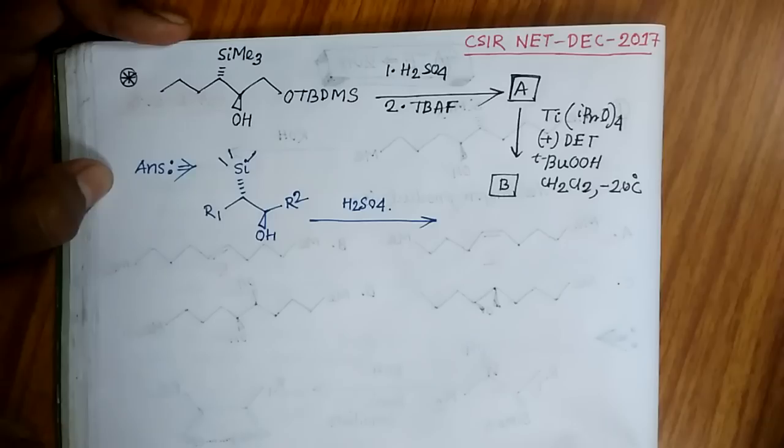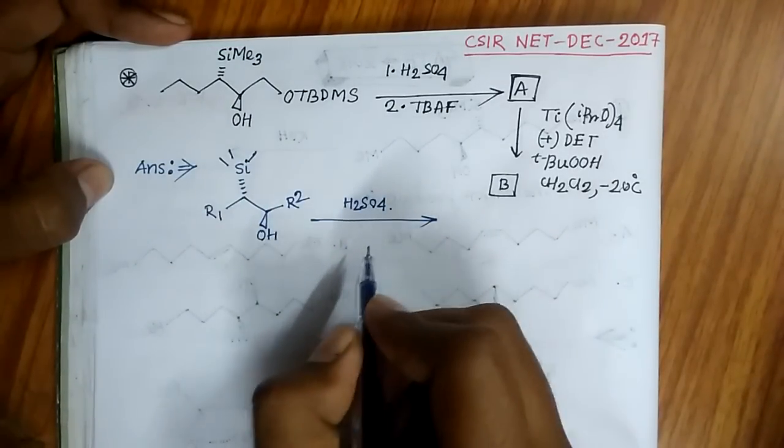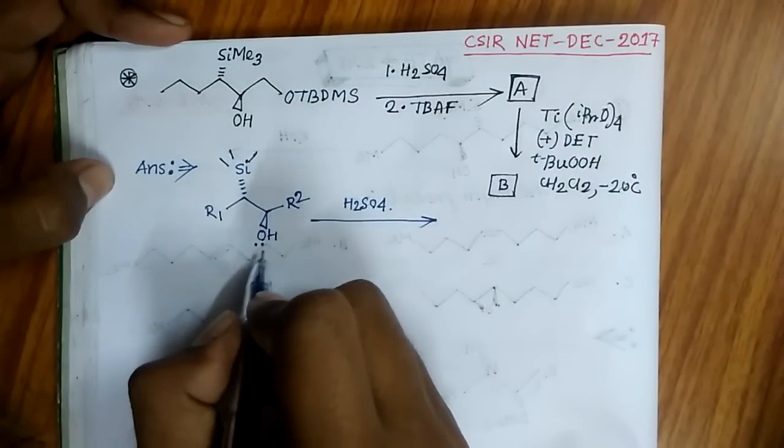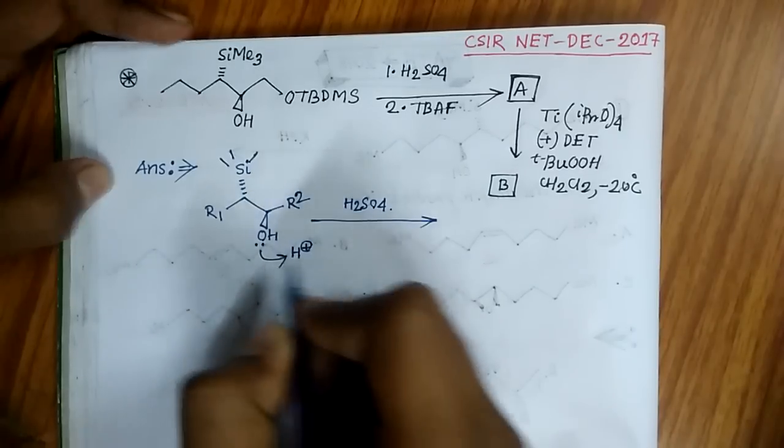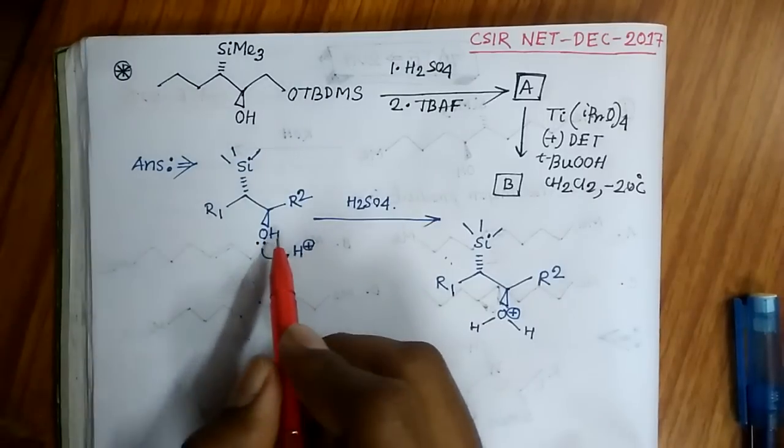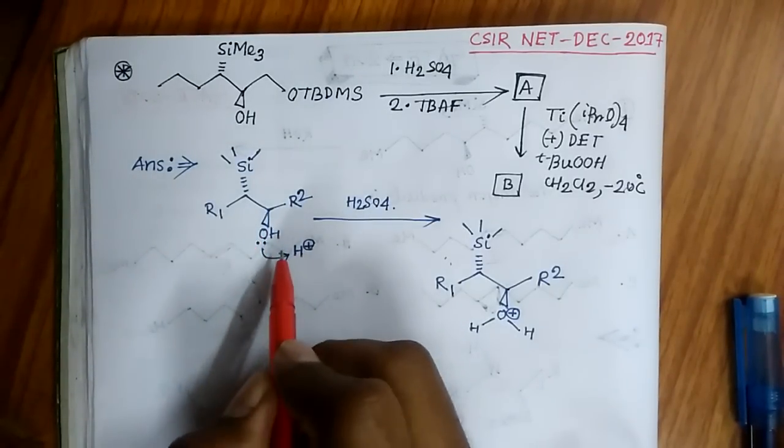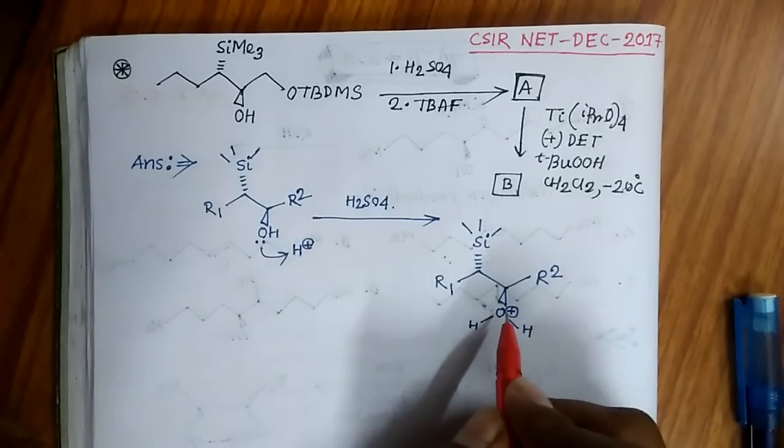This is the question from CSIR-NET 2017 where elimination is taking place in acidic medium. Here the compound is treated with sulfuric acid, so the lone pair of oxygen of that hydroxyl group is abstracting this proton. At first it was a hydroxyl group, which is not a good leaving group. Now as it is protonated, it becomes OH2+, which is a good leaving group.